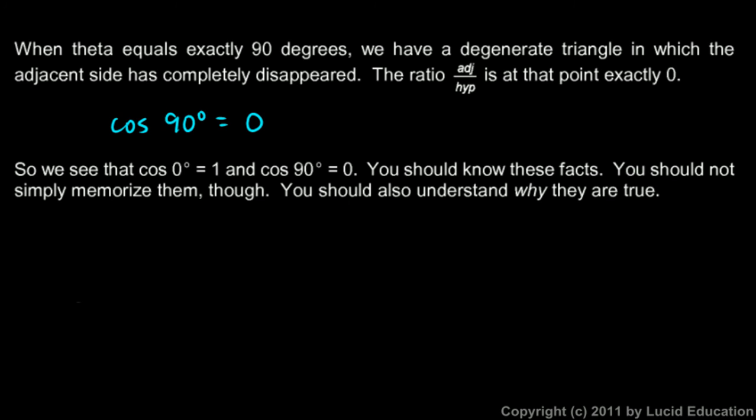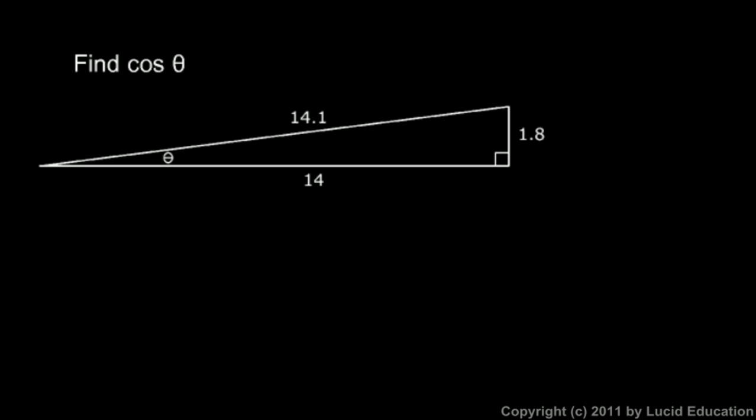Those are facts you should memorize, but better than memorizing them, I would encourage you to understand why they are true. These ideas must be true if you understand that cosine by definition is adjacent over hypotenuse, and as the angle gets close to 0 or close to 90, that adjacent side either gets very close to the length of the hypotenuse or very close to 0.